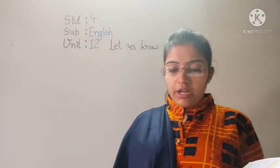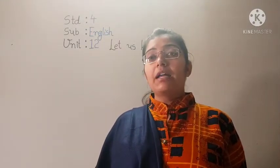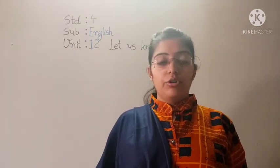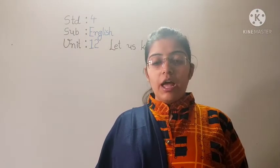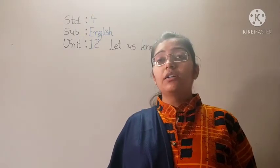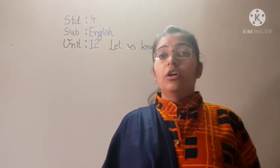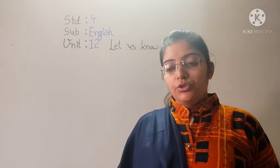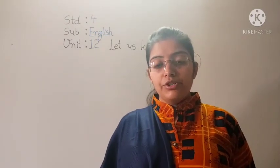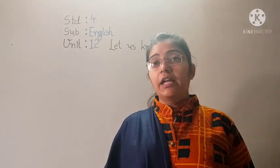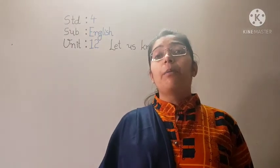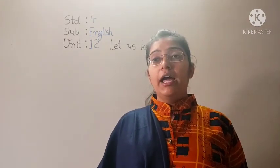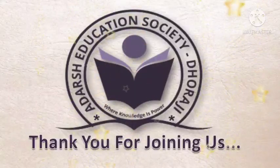Number 3: Write about a friend who helped you. Aap apne friend ke baare mein likho jo aapko help karta hai — yeh aapko khud complete karna hoga. Number 4: What is your ambition in life? Aapko apni life mein kya banana hai — iska answer aap khud likh sakte ho. My ambition in life is to be a teacher and teach the students. Aap apne baare mein likh sakte ho jo aapko banana hai. So, Activity 7 has been completed. Thank you for joining us.